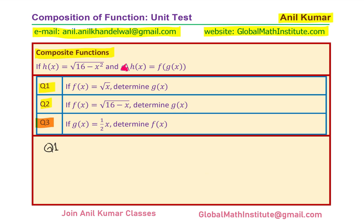We are given that the function h(x) is equal to square root of 16 minus x square. You may also write domain and range of this particular function. Now, h(x) is also equal to f(g(x)). In question number 1, we are given that f(x) is equal to square root of x and we need to find what is g(x).